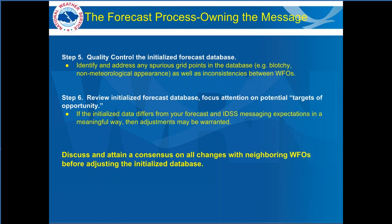The grid team loves to help — please utilize them. If you're seeing significant differences with a neighbor on a regular basis, reach out to your SOO, ITO, and grid team to see if there's a more foundational problem. As we transition to the National Blend of Models, time on this QC step will likely decrease because initialization will no longer run individually at 38 WFOs — it will all come from one source and be sent through the SBN to all offices.